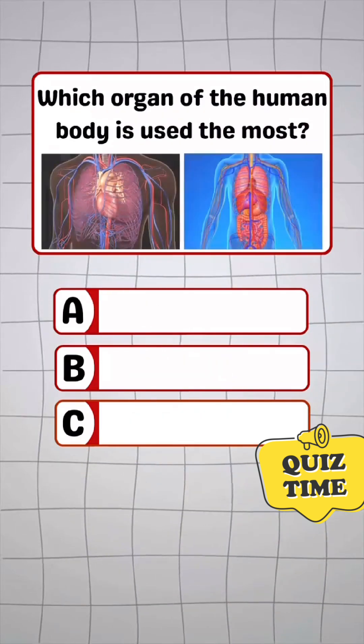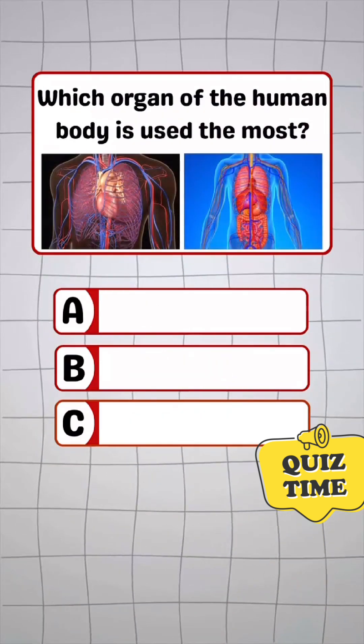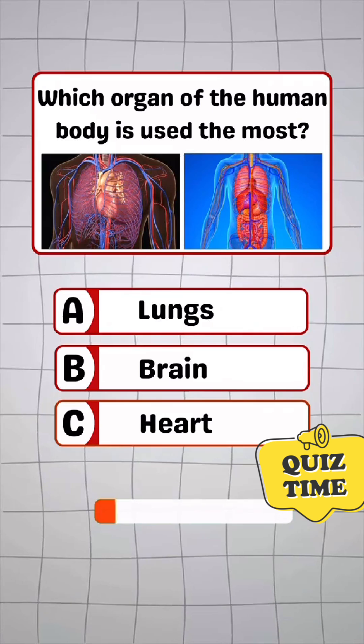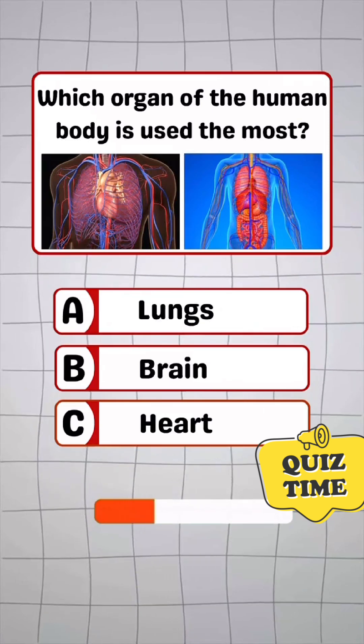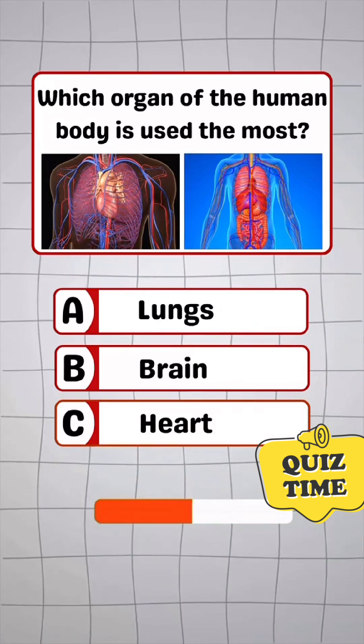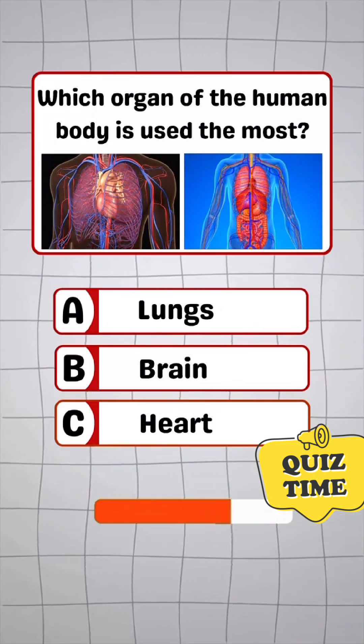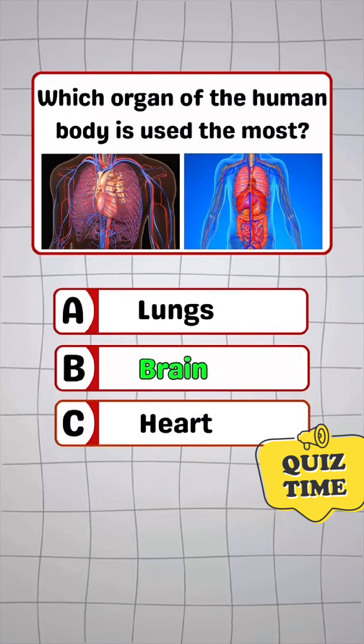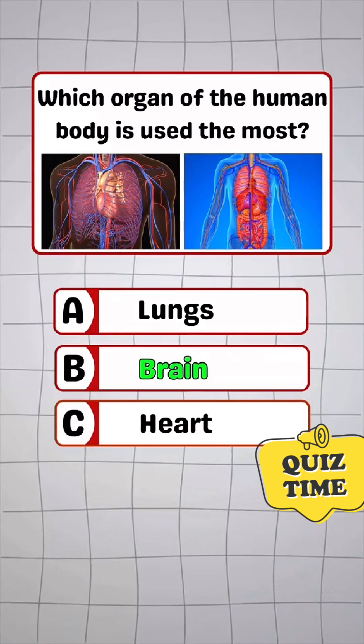Question 4. Which organ of the human body is used the most? Answer B: Brain.